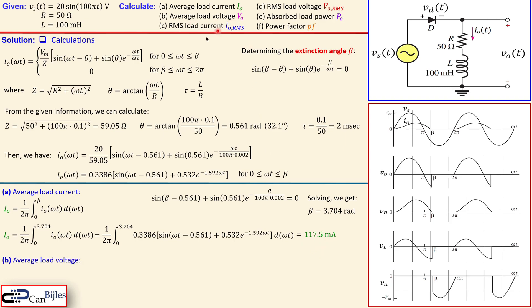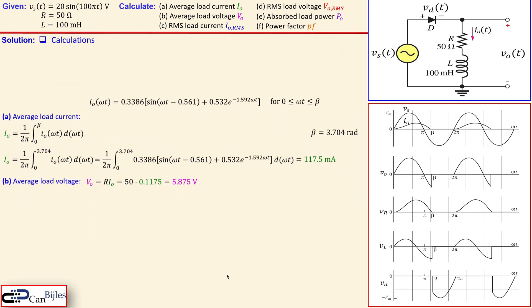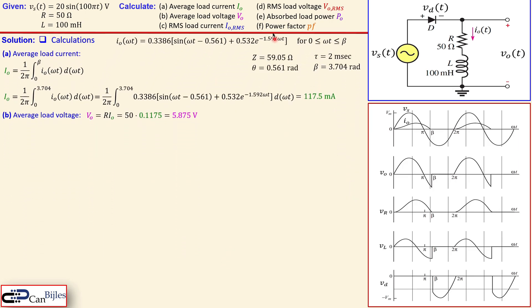Okay. Now the next one is the average load voltage. That is easy because that can be done using Ohm's law. Which is then V_O is equal to R times the I_O. So the average load voltage is resistor times average load current. That is then 5.875 volts. Now taking these all together. And then also the necessary information for later calculation for C, RMS load current.